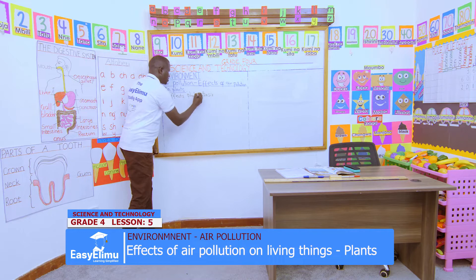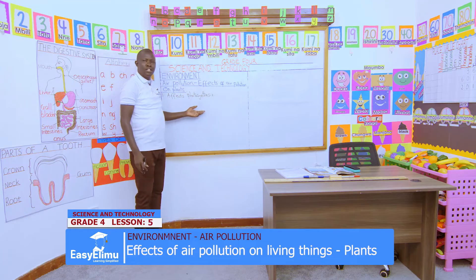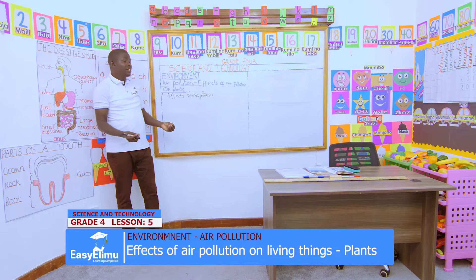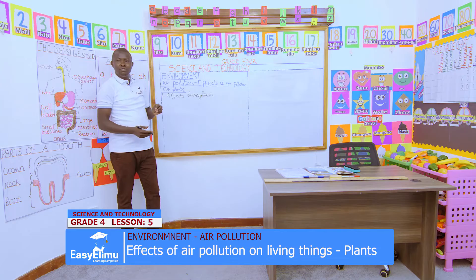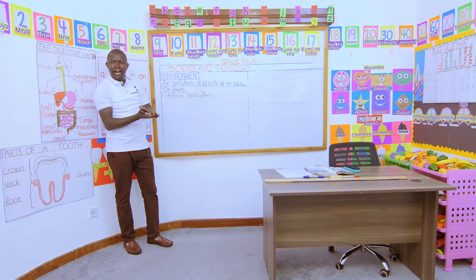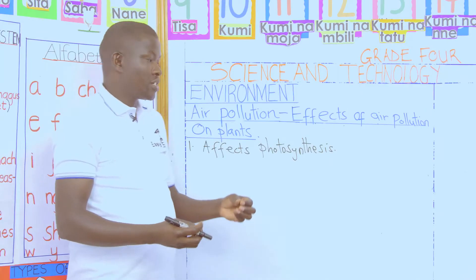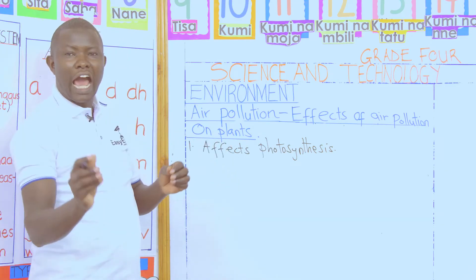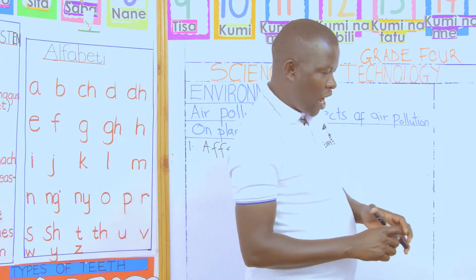How does it affect photosynthesis? Photosynthesis is the ability of plants to make their own food, and plants make their own food from leaves. When the leaves are full of dust, they cannot receive sunlight, which is responsible for food manufacturing. The green color of the leaf cannot function well, so it affects photosynthesis of the plants.